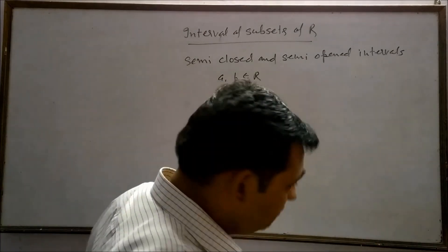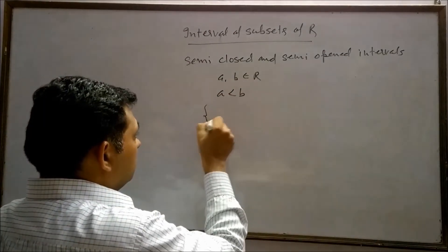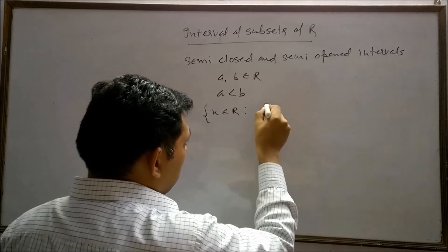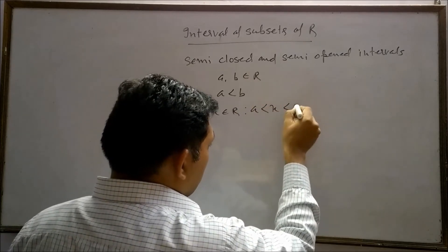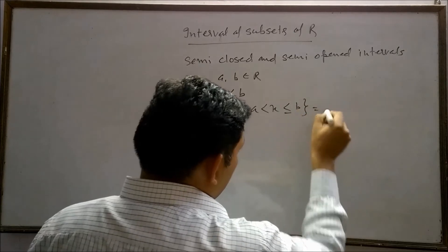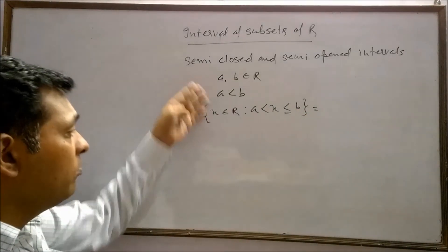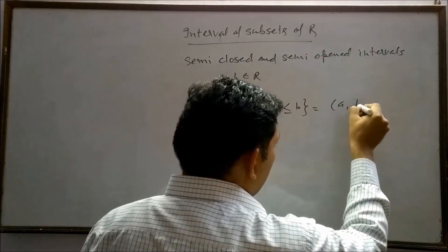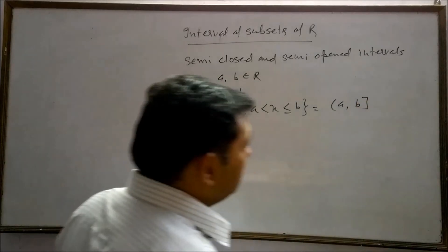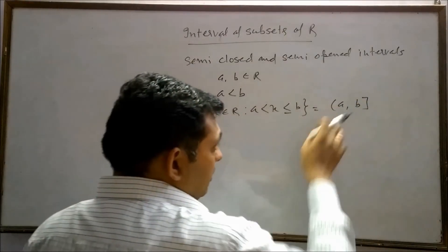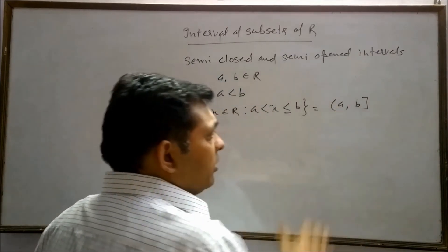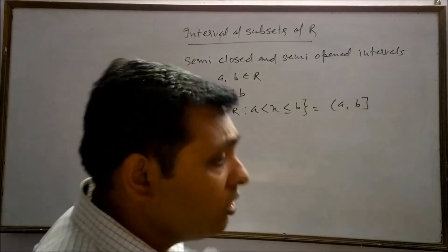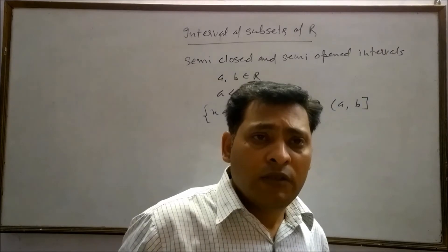Similarly, if we have a set where x belongs to real numbers such that x is greater than a and less than or equal to b, this set can be represented in the form of interval as (a, b] — open at a, closed at b. This means a is not included in the set, but b is included, and all numbers lying between a and b are also included in the set.